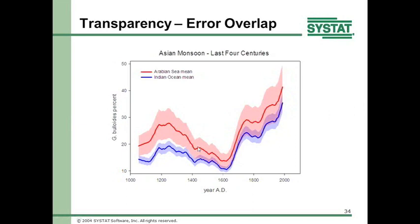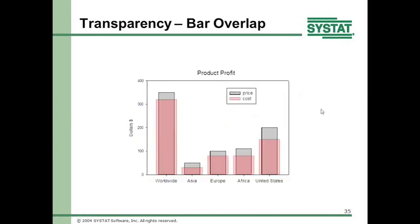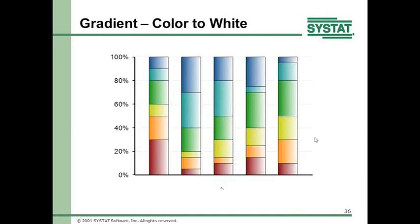Another clever example of transparency: you have two bar charts to compare. Rather than put them side by side, put them on top of one another. Price is the gray, cost is the pink, and you can easily tell what the profit is just by looking at the difference. Color gradients are visually beautiful and have a sort of 3D effect. Scientifically, I'm not convinced gradients add anything compared to transparency — but for PowerPoint presentations you can produce impressive results.